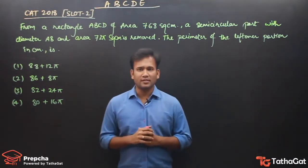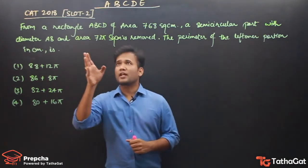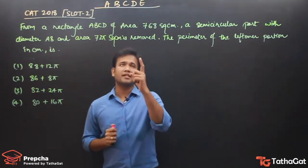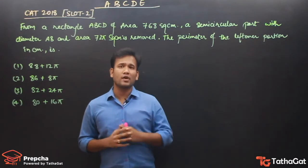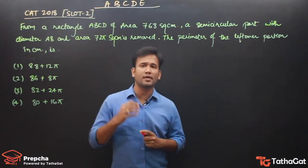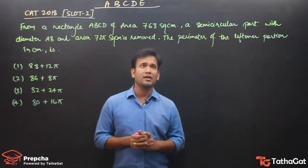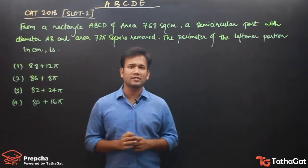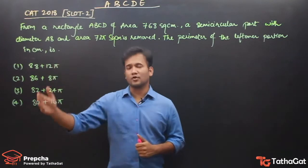So let's go through the question. From a rectangle ABCD of area 768 square centimeter, a semicircular part with diameter AB and area 72π square centimeter is removed. The perimeter of the leftover portion in centimeter is, and these are the options.